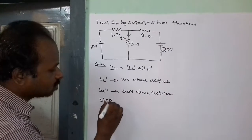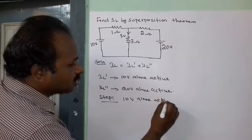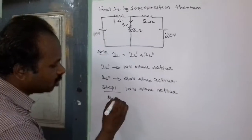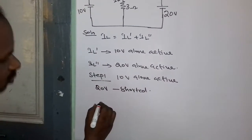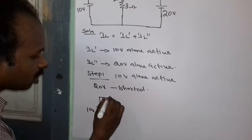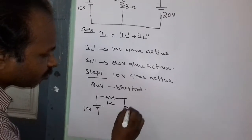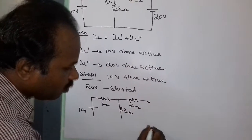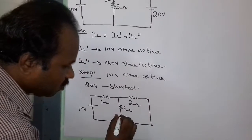We go for step 1 — 10V alone active. With 10V alone active, this 20V is short-circuited. We draw the circuit with the 10V source and 20V source short-circuited.